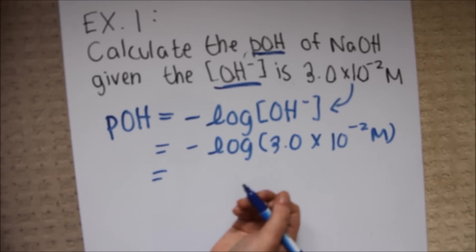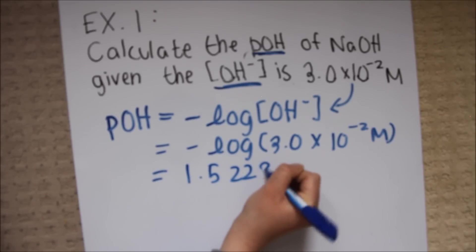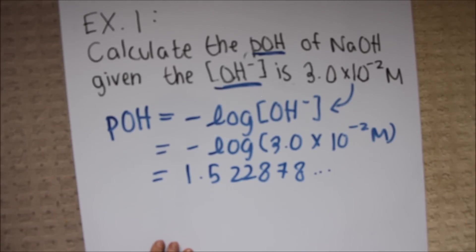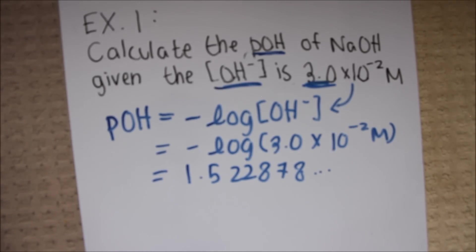Once I enter this into my calculator, I'll get a value of 1.522878 and the list continues. However, we only have two significant digits in the question. Therefore, we can only have two significant digits in the answer. The value that comes before the decimal in pH does not count as a significant digit. Only the values that come after count as significant digits. Therefore, we should have an answer of 1.52.